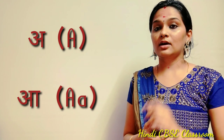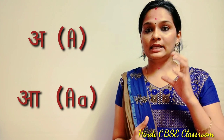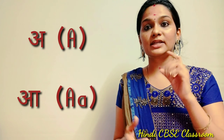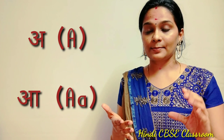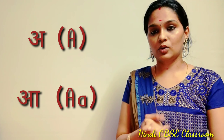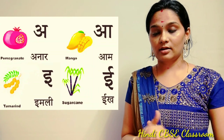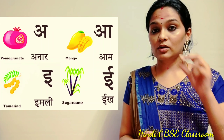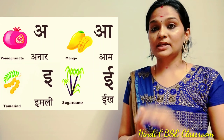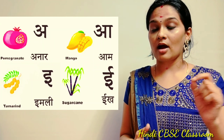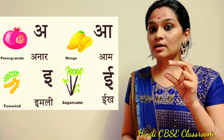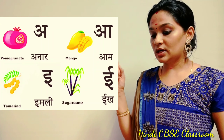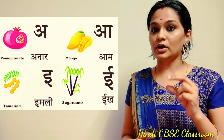Let's start with the Swar. First comes A — in English there is one A vowel, but in Hindi there are two alphabets with the same Swar: one is A and one is double A. For A, you only have to open your mouth a little — A for Anaar. For double A, you have to open your mouth fully — A for Aam. Next one is E — E for Imli (tamarind), E for Ik. Then comes U — U for Ullu (owl), U for Un (wool).